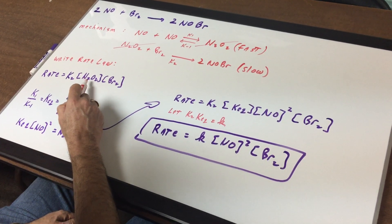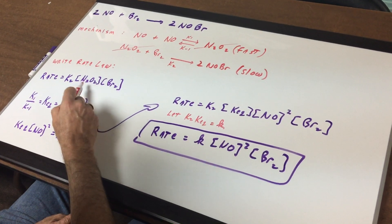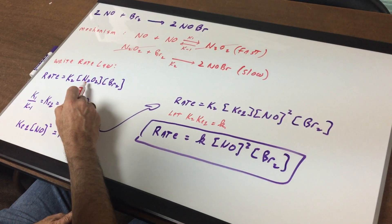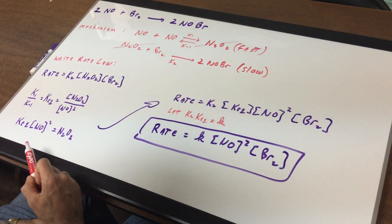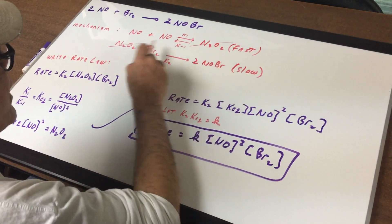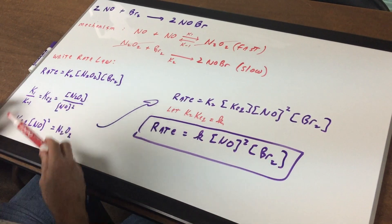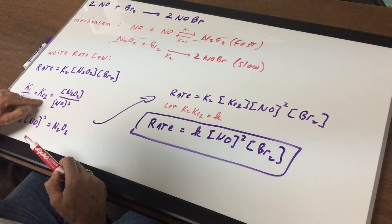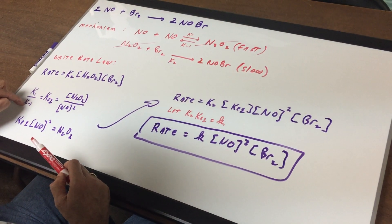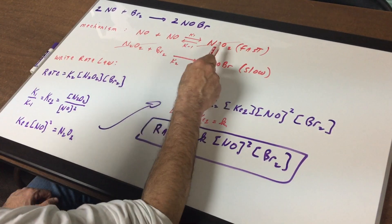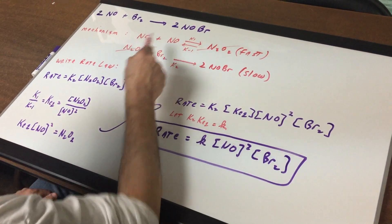You can't have an intermediate in the final rate law. So what we got to do, the gimmick is we're going to substitute N2O2. Now, N2O2 is formed in the first fast step. So what we're going to do in addition to the slow step, you go to the fast step first. And that's the equilibrium step. Now, the KEQ, which is equal to the K1 over the K minus one, is equal to the products over the reactants. So it's N2O2 divided by NO squared.